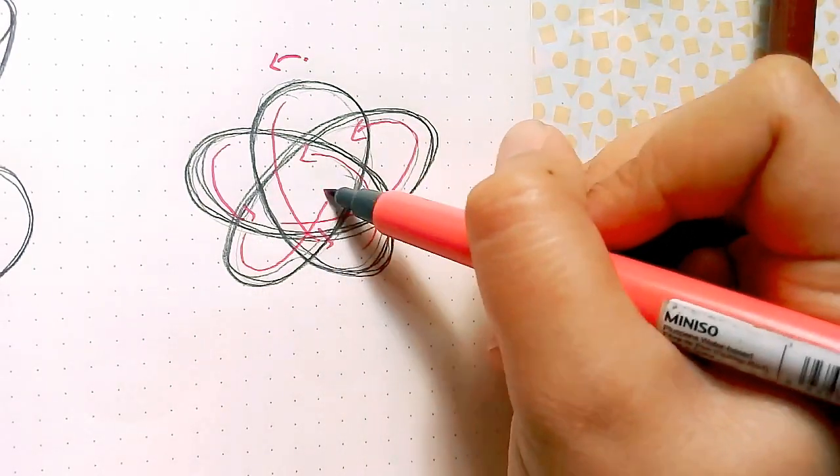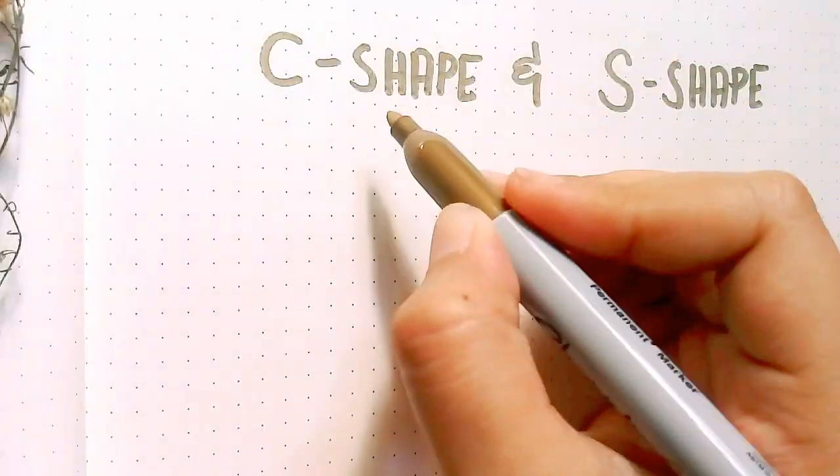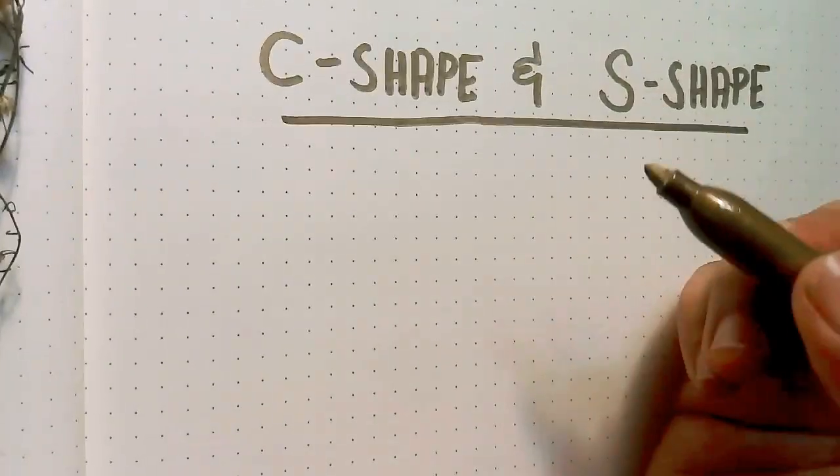And this is the last drill for oval shape. And we can now proceed to C shape and S shape.